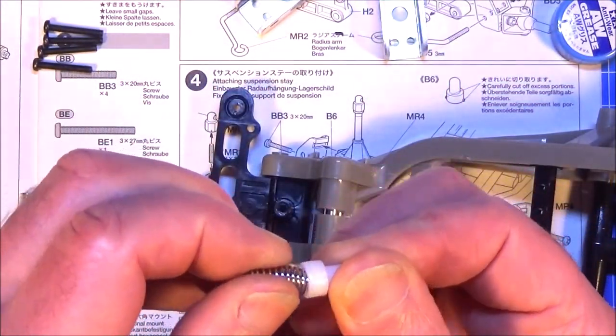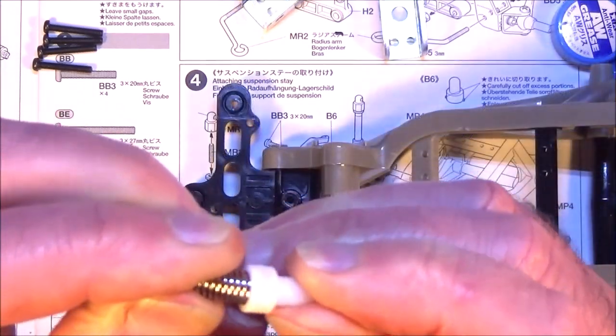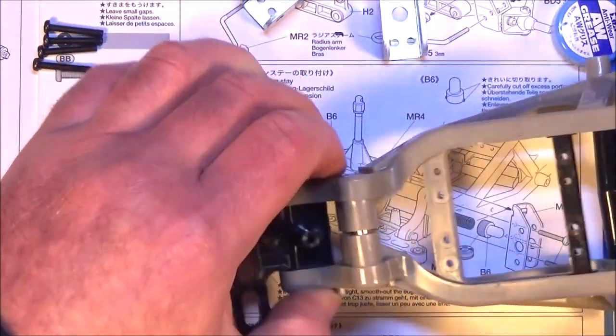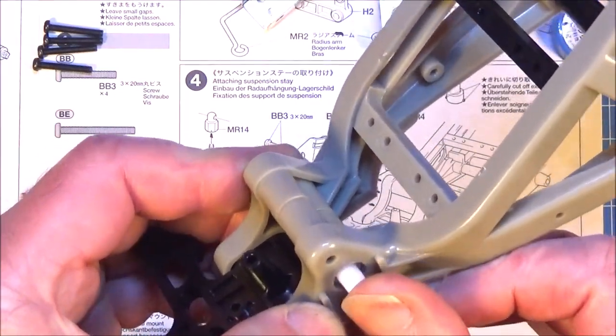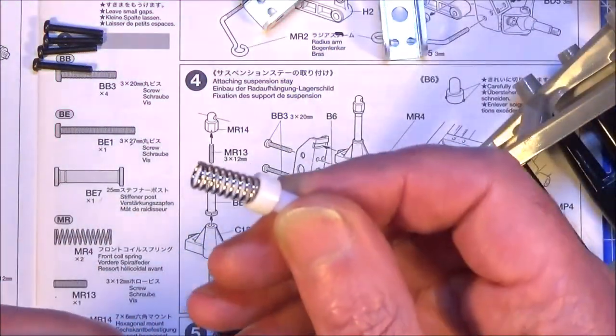Then you want the spring which is an MR4 and you want to push that into part B6. And then that's going to go into that hole in the chassis there and that's going to be your front suspension. Same for the other side.